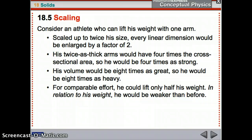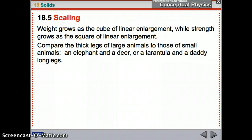Alright. Consider an athlete who can lift his weight with one arm. Consider the strongest person at our school. They can lift their whole weight with one arm. They're crazy strong. Now, we make them twice as big. What happens? They're twice as big. Their arms are twice as thick. They have 4 times the cross-sectional area. Right? It goes up by 2 squared. So, he would be 4 times as strong. However, the volume would be 8 times as great. Because 2 cubed is 8. So, it would be 8 times the volume. So, he would be 8 times as heavy. So, even though he's 4 times as strong, he's 8 times as heavy. So, now, he could only lift half his weight. So, in relation to his weight, he's actually weaker than before. Weight grows as the cube of the linear enlargement, and strength grows as the square. So, that's the math you need to remember for this section. Weight goes up by the cube. Strength goes up as the square.